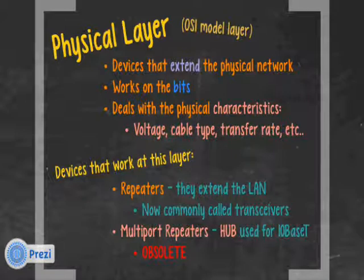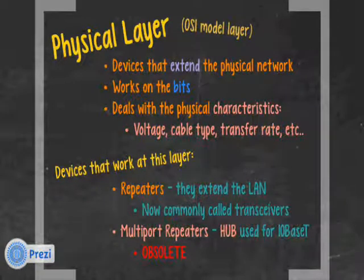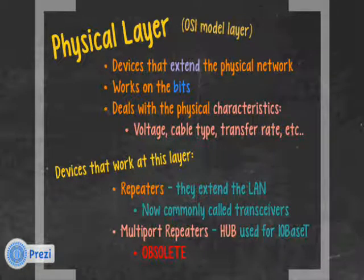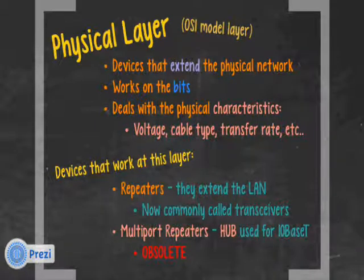Devices that work at this layer are repeaters — they extend the LAN. We don't use repeaters too often anymore. Now what we commonly use are transceivers. For example, Ethernet cable length is typically 100 meters. If you want it to go longer, you can use a transceiver which converts from copper to fiber. Copper can only go 100 meters, but fiber can go a couple of kilometers. So you put a transceiver that converts from copper to fiber, and at the other end, another transceiver that converts from fiber to copper.